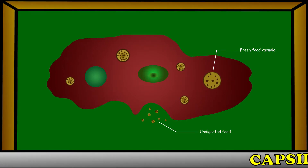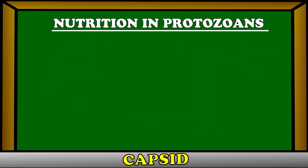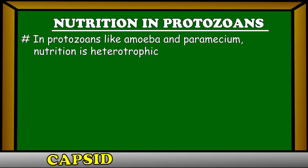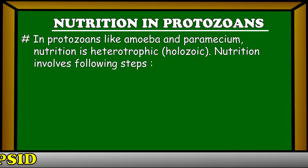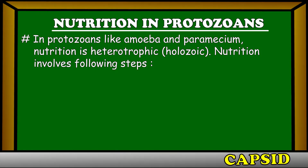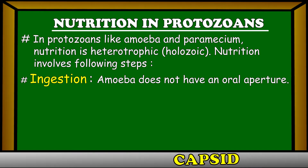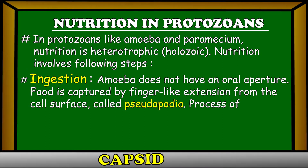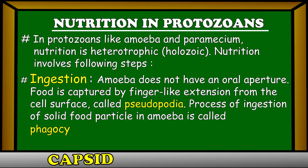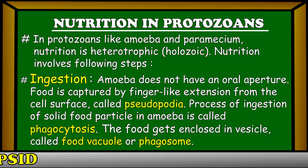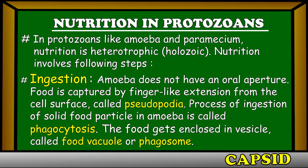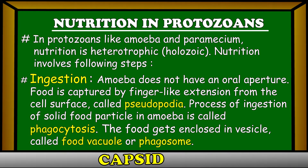Let's make notes on nutrition in unicellular organisms. In protozoans like amoeba and paramecium, nutrition is heterotrophic and involves the following steps. Ingestion: Amoeba does not have an oral aperture. Food is captured by finger-like extensions from the cell surface called pseudopodia. The process of ingestion of solid food particles in amoeba is called phagocytosis. The food gets enclosed in a vesicle called food vacuole or phagosome.